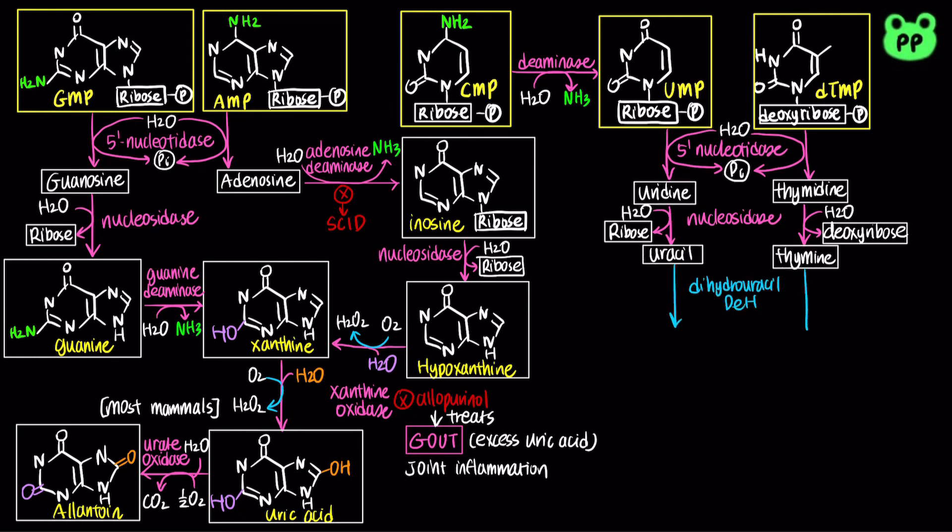Next, uracil and thymine are reduced by dihydrouracil dehydrogenase to produce dihydrouracil and dihydrothymine, which is coupled to the oxidation of NADPH to NADP+.